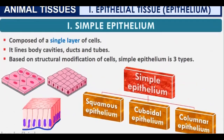Simple epithelium is composed of a single layer of cells and is of three types: squamous epithelium, cuboidal epithelium, and columnar epithelium. It lines body cavities, ducts, and tubes such as the esophagus. Essentially, simple epithelium acts as a lining or protective layer.